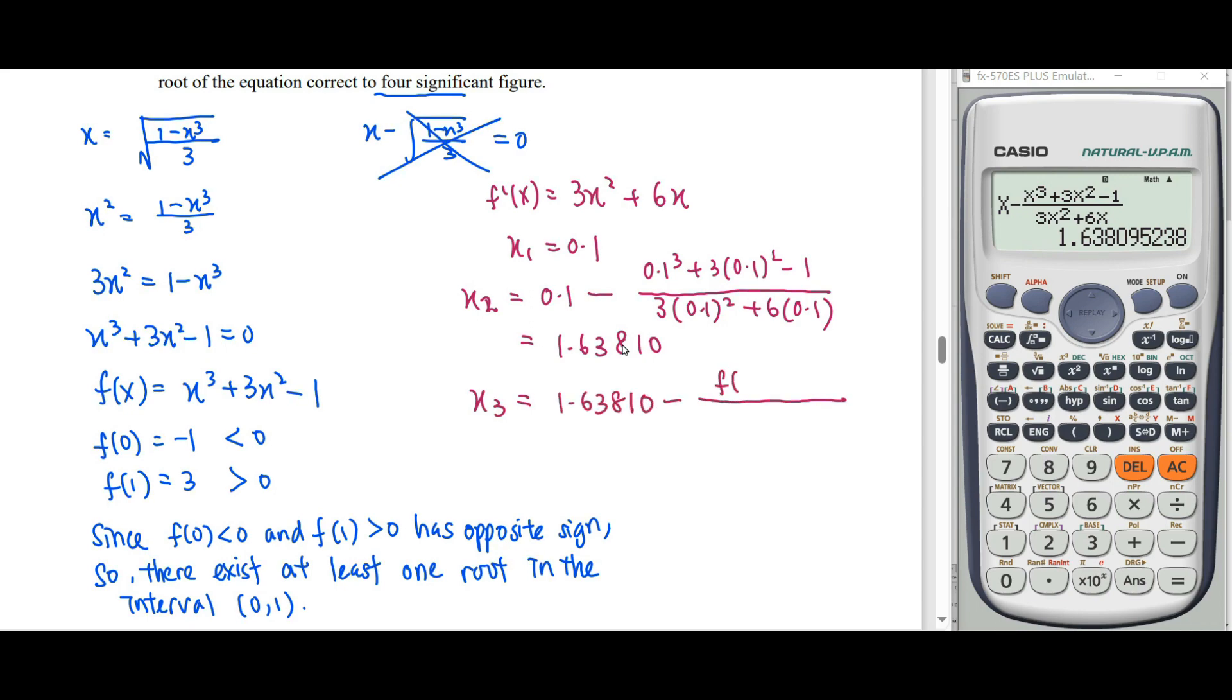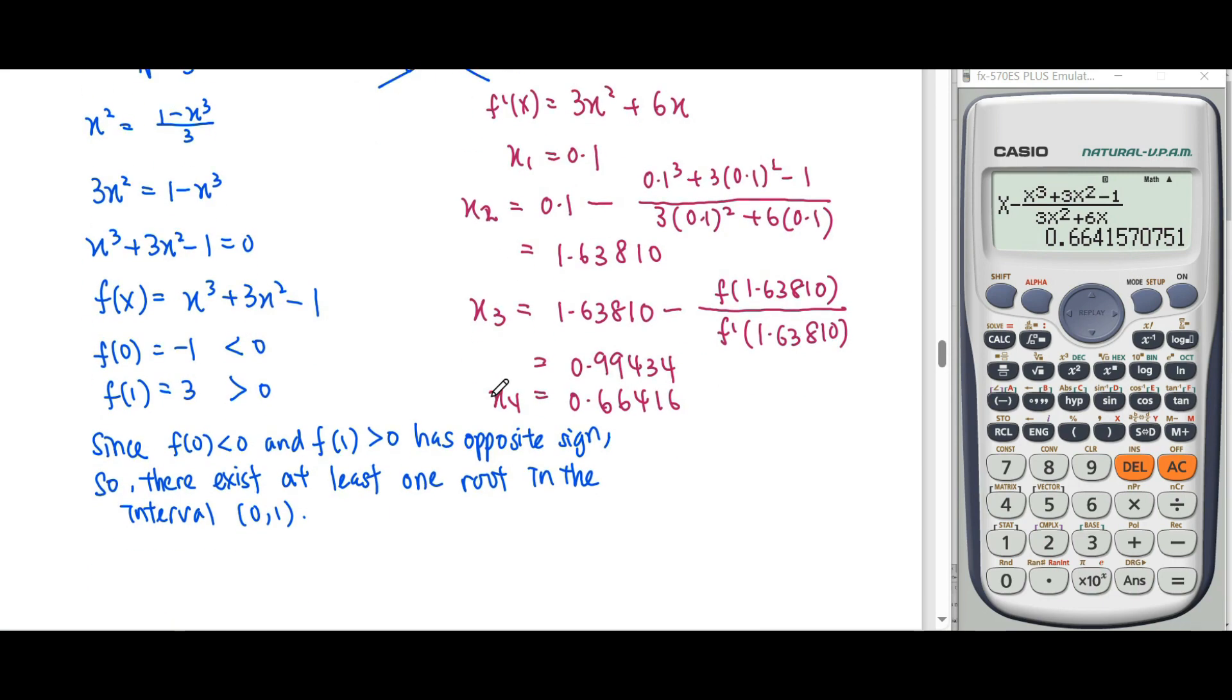We calculate x₃ using x₂ = 1.63810 in the formula. This process will be repeated until we get a repeated value.